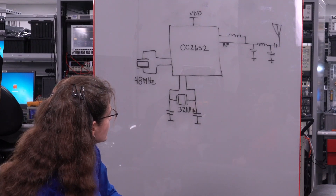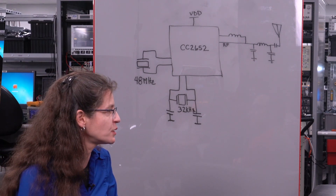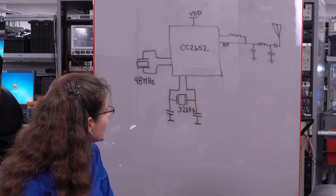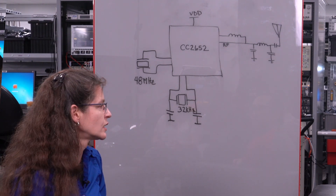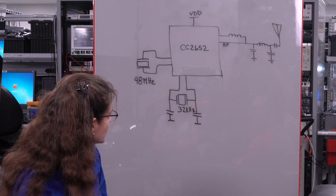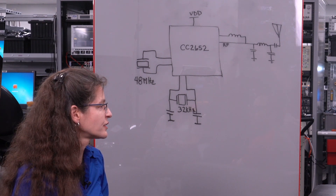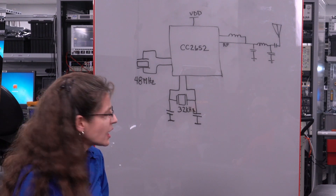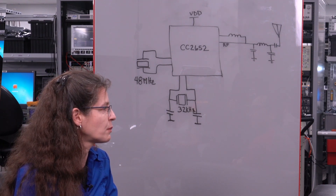Yeah, that's a really good question. If we look here at this block diagram, we can see a device — the CC2652 — and if you look at it, you have the device and then you have two different crystals. In this case, we have a 48 megahertz crystal and a 32 kilohertz crystal, and then matching used for the RF. You can see that a lot of the external components are really these crystals and the associated capacitance.